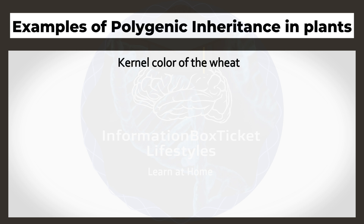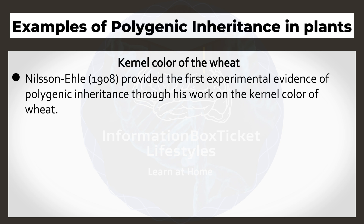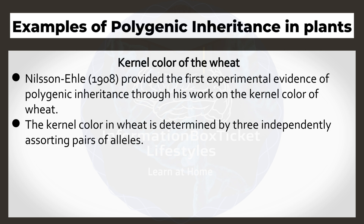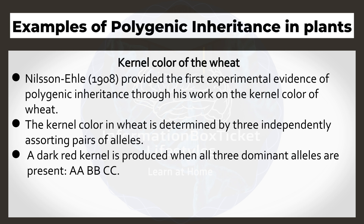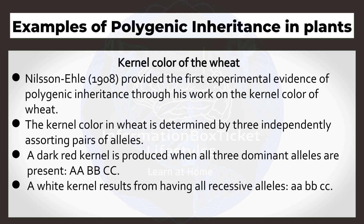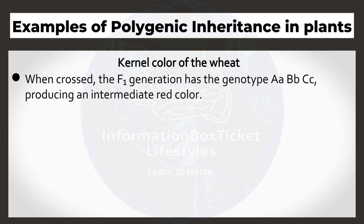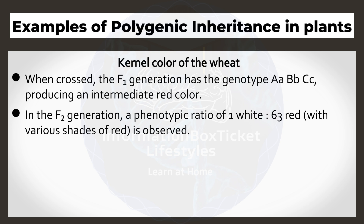Kernel color of wheat: Nielsen Ehle (1908) provided the first experimental evidence of polygenic inheritance through his work on the kernel color of wheat. The kernel color in wheat is determined by three independently assorting pairs of alleles. A dark red kernel is produced when all three dominant alleles are present. A white kernel results from having all recessive alleles (aa bb cc). When crossed, the F1 generation has a genotype AaBbCc, producing an intermediate red color. In the F2 generation, a phenotypic ratio of 1 white to 63 red, with various shades of red, is observed.